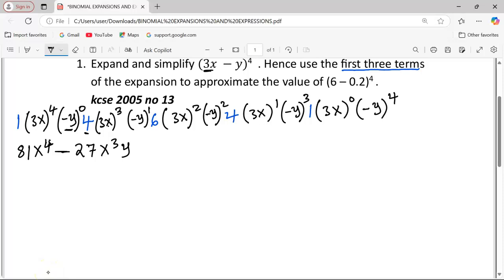In the next term, whereby we are beginning with a coefficient of 4, it will be 4 times 3x power 3. This will be 27x^3. Remember, I have not multiplied 27 by 4. Sorry, it should be 27 by 4. This is 108x^3.